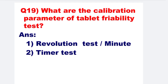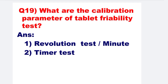Next: What are the calibration parameters of tablet friability test? There are two parameters for the calibration of the friability test. Number one is revolution test per minute, and number two is timer test.